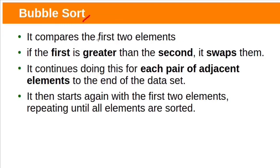Let's see bubble sort. Bubble sort is a simple sorting algorithm. It starts with the first element and compares it with the adjacent element — meaning it compares with the second element. If the first element is greater than the second element, then swap those two elements. The same process is repeated for each pair of adjacent elements till the end of the collection, then again start from the first element and repeat until all elements are sorted.